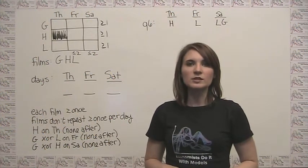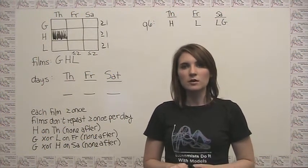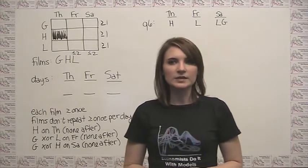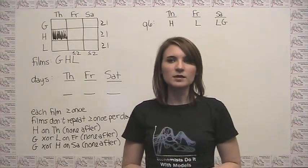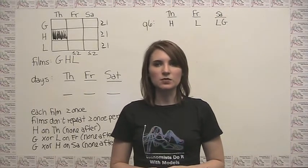Question four in this game, or question nine in the section overall, reads: if greed is shown exactly three times, harvest is shown exactly twice, and limelight is shown exactly once, then which of the following must be true?